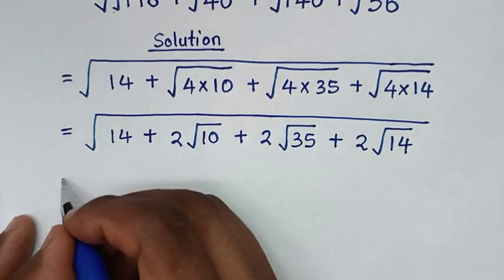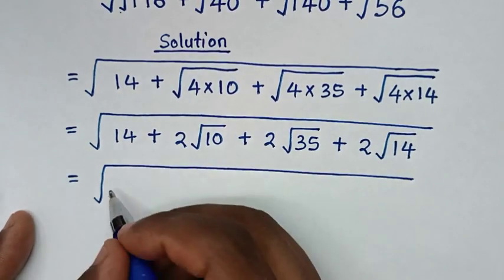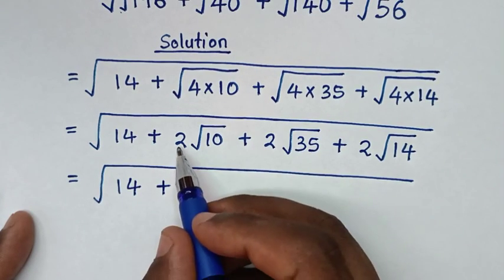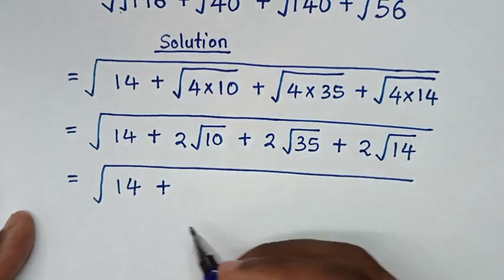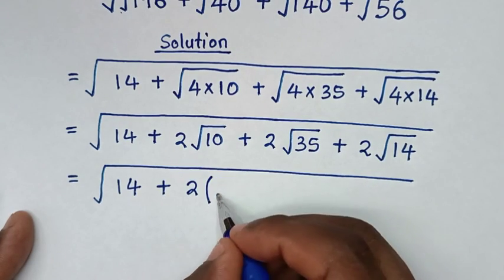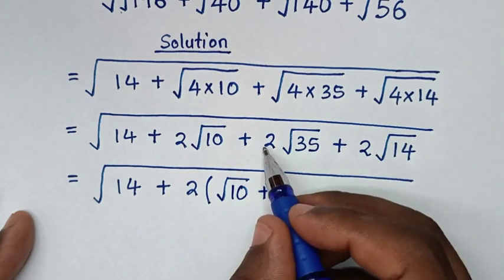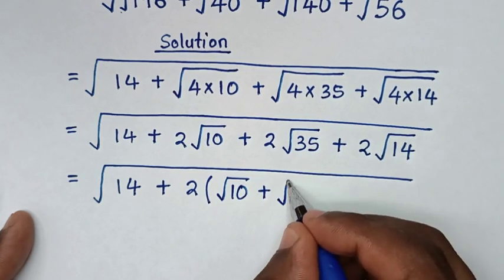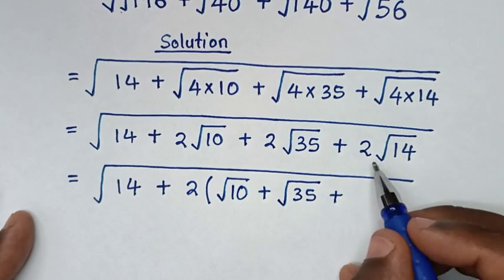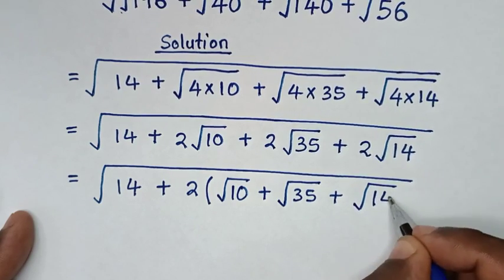Then in the next step it will be equal to square root of 14 plus 2, which is common, so we take out 2: times bracket square root of 10 plus square root of 35 plus square root of 14 bracket.